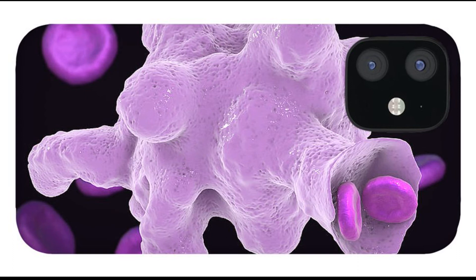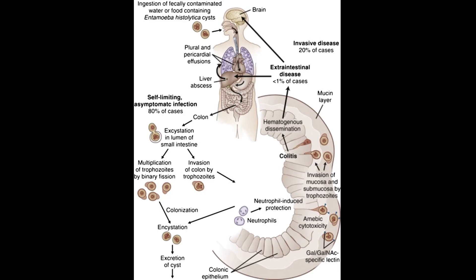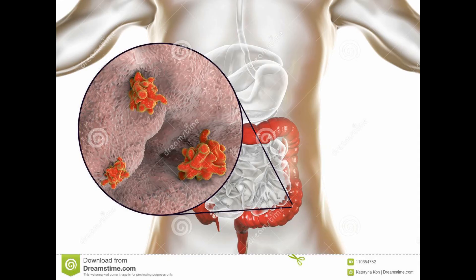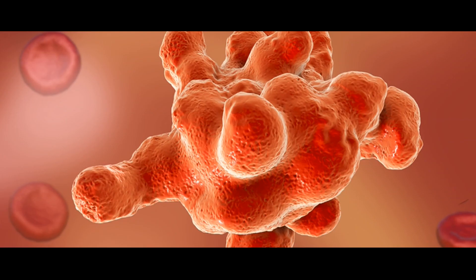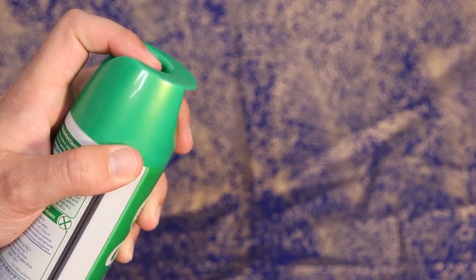5. Entamoeba histolytica can cause amoebiasis, or amoebic dysentery. These amoeba parasites are normally ingested through drinking water contaminated with fecal matter. When drinking water, it cannot be called clean just because visible foreign substances are removed. We must disinfect our water before we drink it.